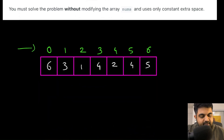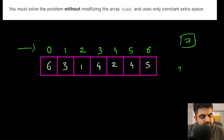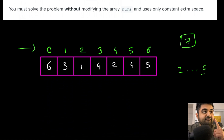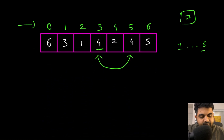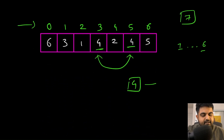Let's understand with an example. This input contains seven elements with values one up until six, but one value is repeated. We can clearly see that the repeated value is four, so in this case we need to return four as the answer.